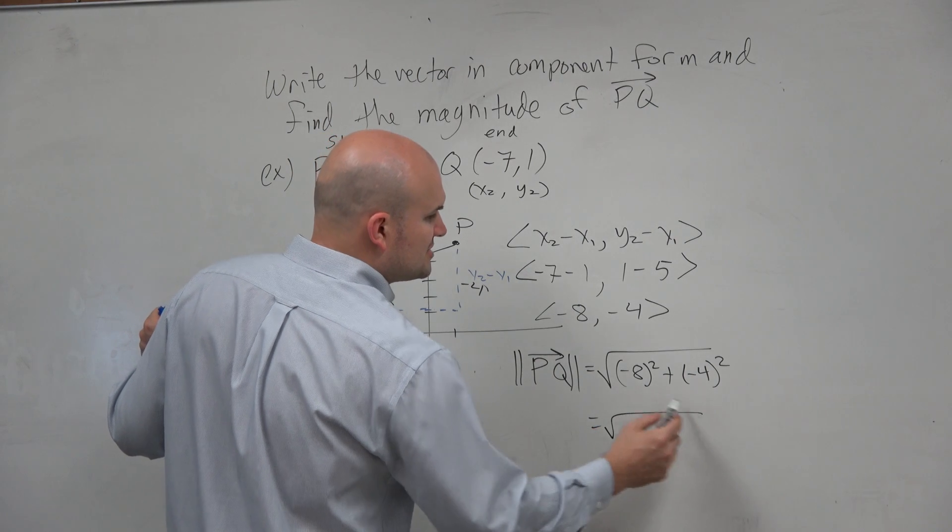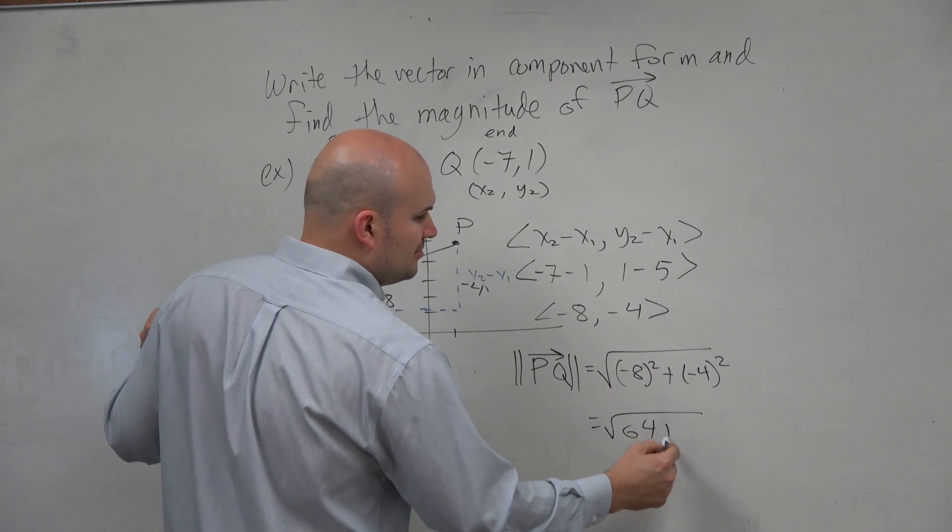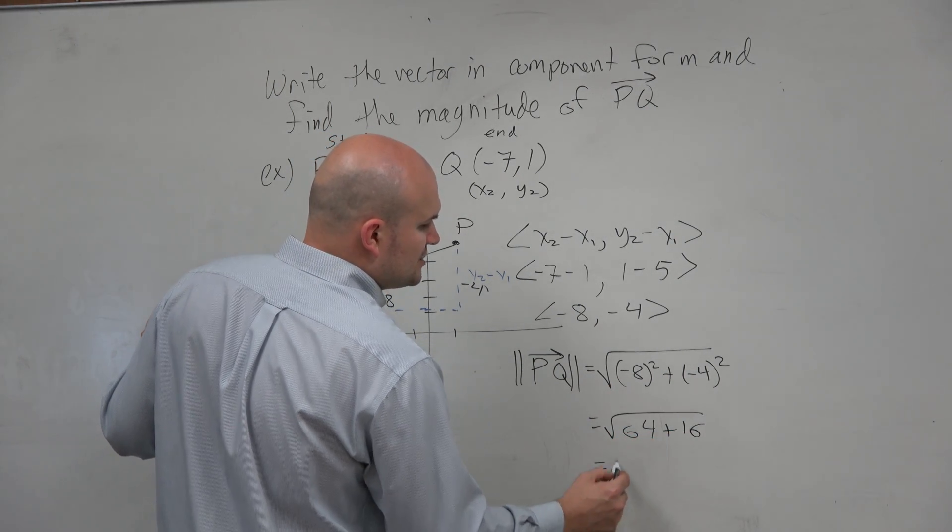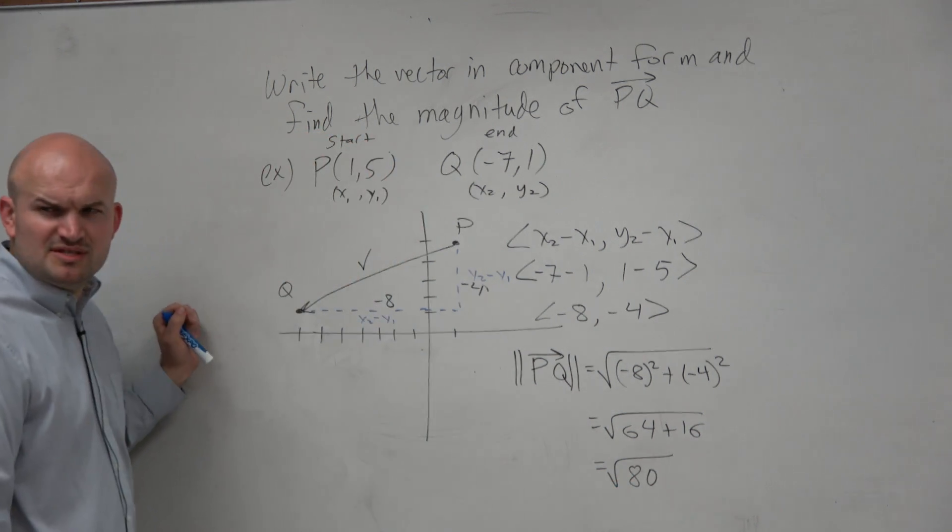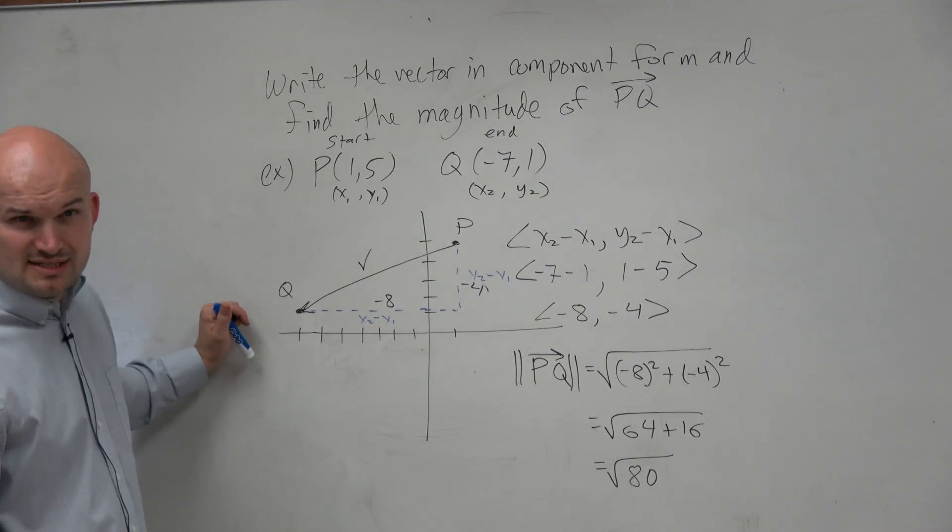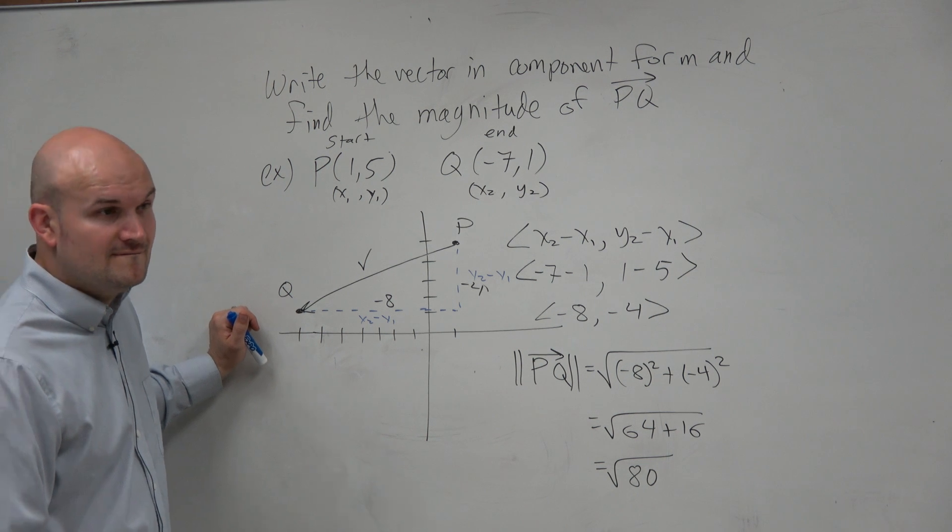So therefore, we have square root of 64 plus 16 equals the square root of 80. And then I want to say, what square number divides into 80? It looks like 16 does. And it goes in there, 16 times 5.